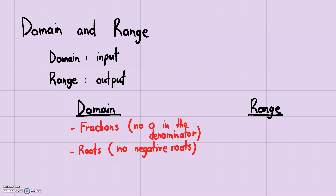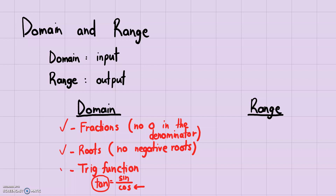One more thing to consider is trigonometric functions. These have specific domain and range as well. Specifically tangent — tangent is the sine function over the cosine function, so whatever number makes the cosine function zero is going to be undefined for tangent, because that would make the denominator zero. So these three are the big things to look out for when finding limiting factors of the domain.